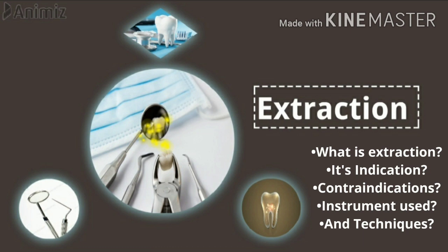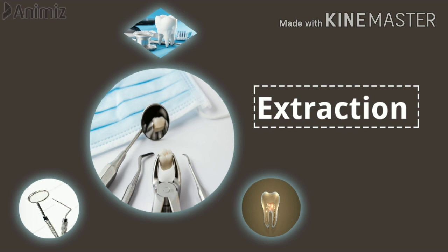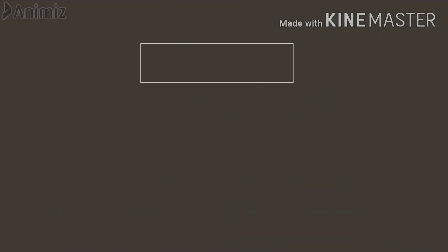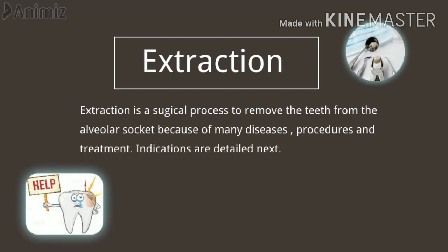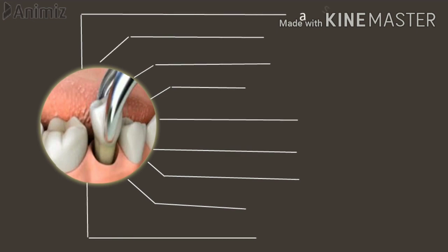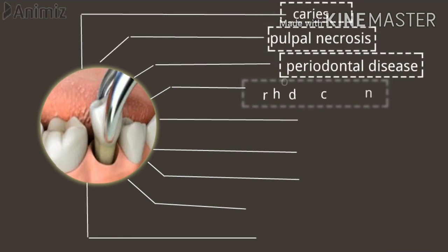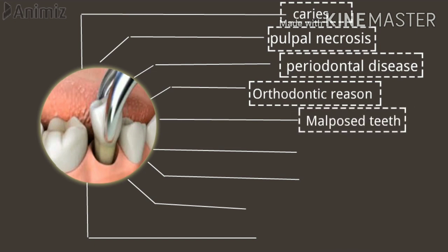Coming every alternative day on your YouTube channel, in this series we are going to learn about what is extraction, its indications, contraindications, instruments used, and techniques. What is extraction? Extraction is a surgical process to remove the tooth from the alveolar socket, because of many diseases, procedures, and in need of many treatments.